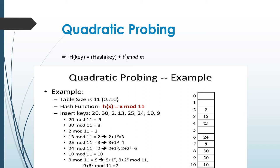25 mod 11 equal to 3. Again we can't place because 13 is placed there. So by using the formula, 25 is placed at key value 4. Next, 24 should be placed at key value 2, but already 2 is placed. So using the formula: 2 + 1² = 3, but already 13 is placed. So i is incremented: 2 + 2² = 6, and 6 is empty, so 24 is placed at key value 6. Next, 10 is placed at key value 10.